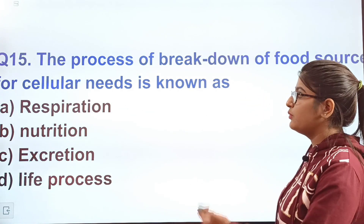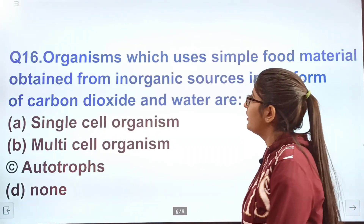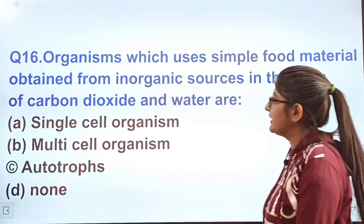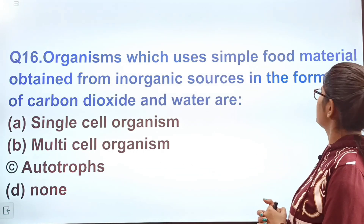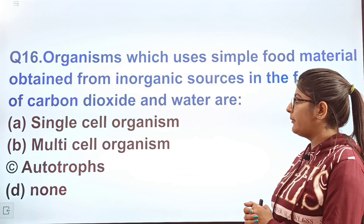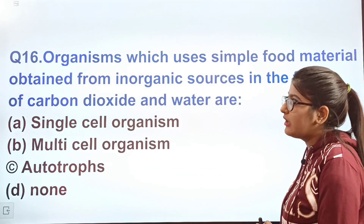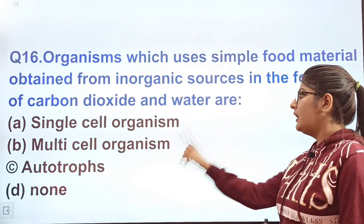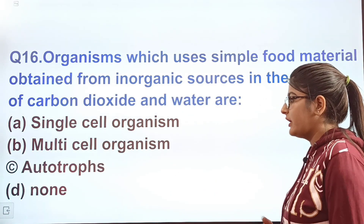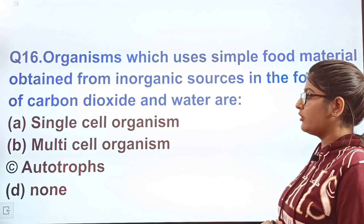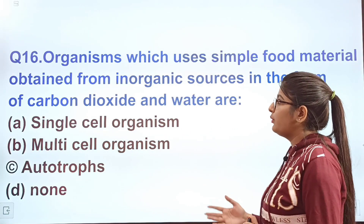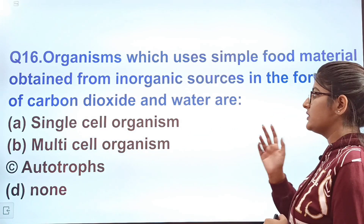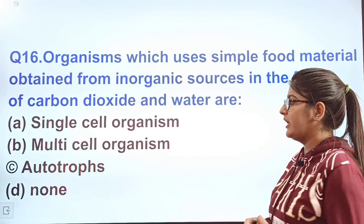Question 16: Organisms which use simple food material obtained from inorganic sources in the form of carbon dioxide and water are — option A single-celled organisms, option B multicellular organisms, option C autotrophs, option D none. Who obtains food from inorganic sources like CO2 and water?